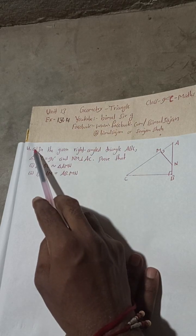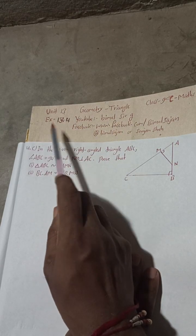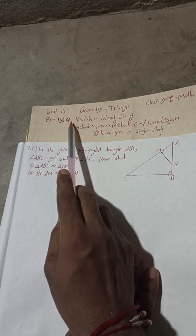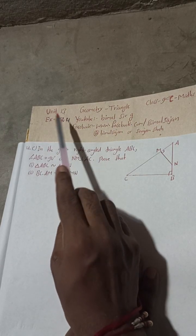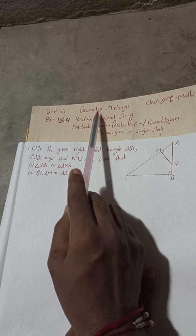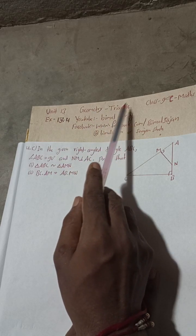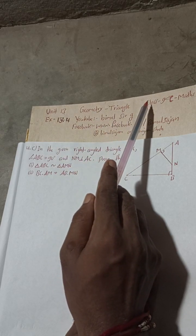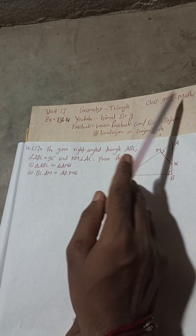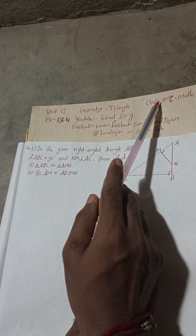This is question number 4C, exercise 13.4, unit 13, geometry triangle, compulsory maths, class 9.